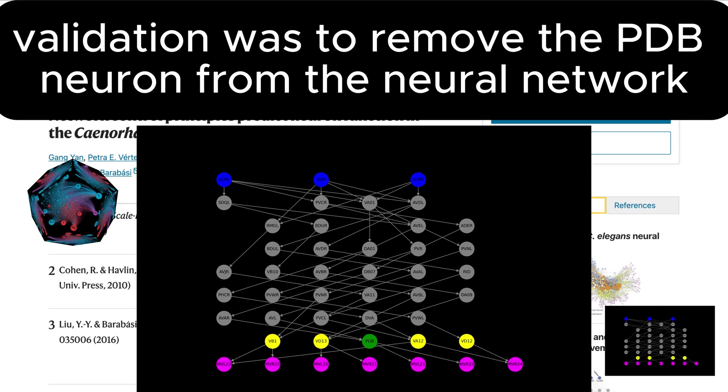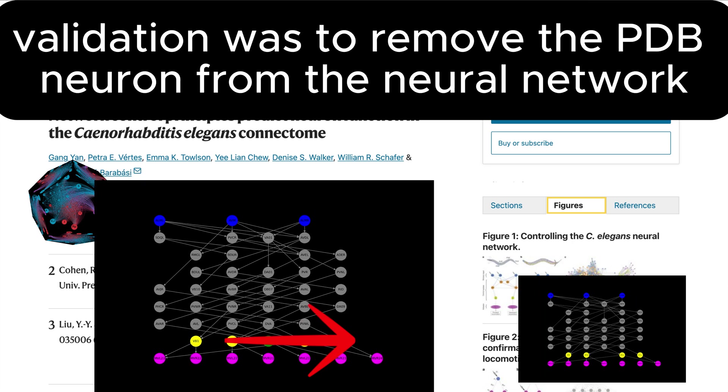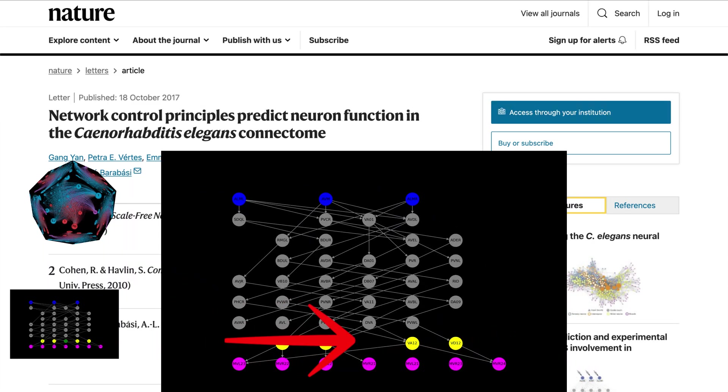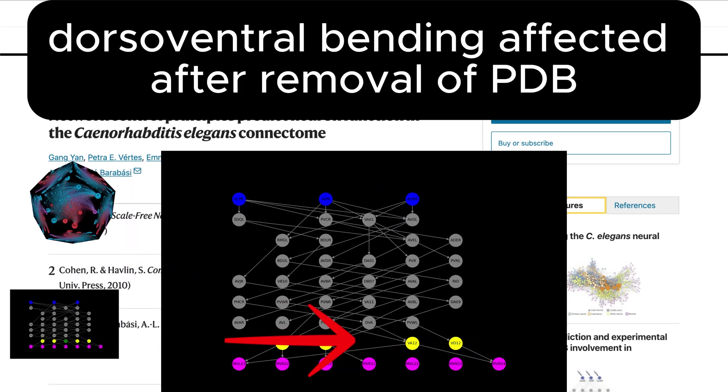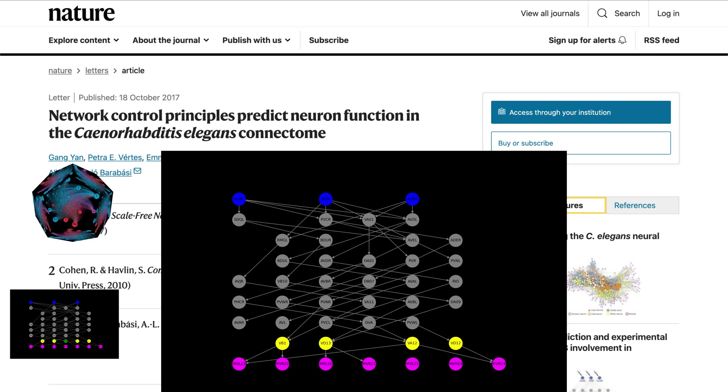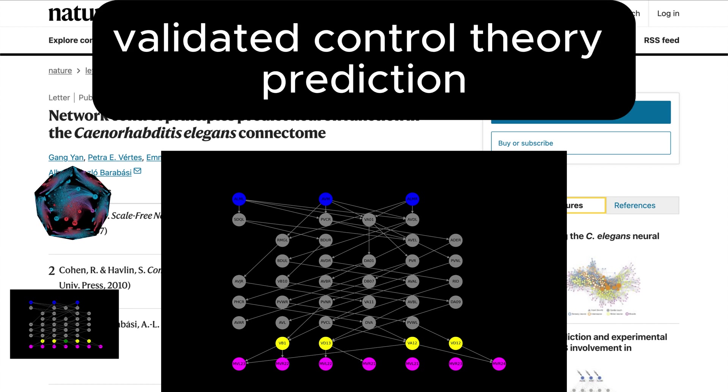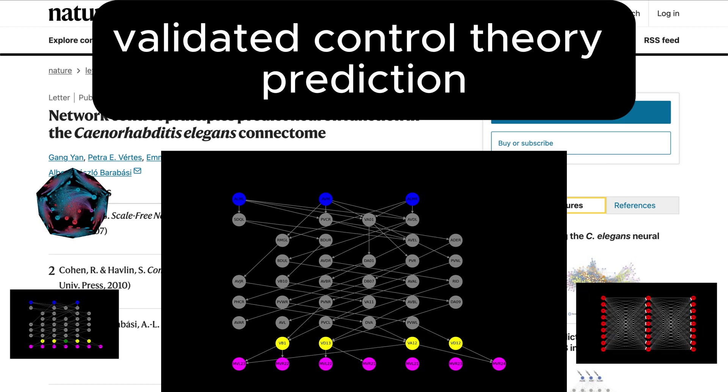To validate these predictions, researchers performed experiments to test the role of PDB. When they removed this neuron, they observed significant changes in the worm's movement, particularly in dorsal ventral bending. This experimental confirmation was a powerful proof of concept, showing how mathematical models can translate directly into discoveries.